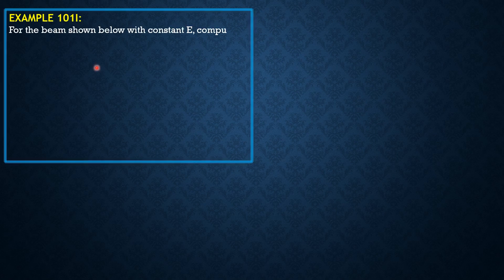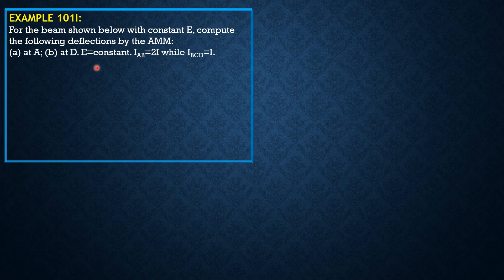For the beam shown below with constant E, modulus of elasticity, compute the following deflections by the area moment method at point A, at point D. The modulus of elasticity is constant, with moment of inertia of portion AB equal to 2I, while for BCD it is I.